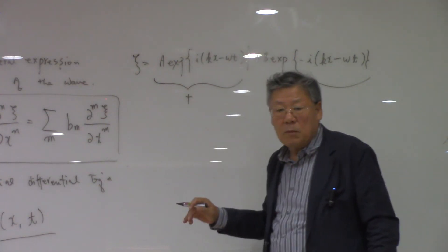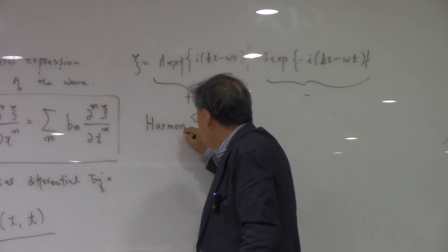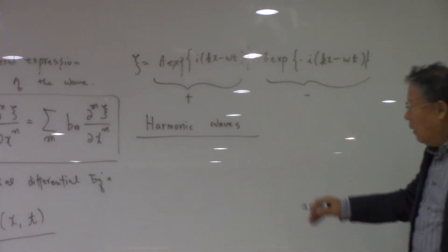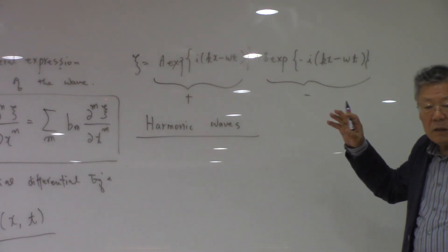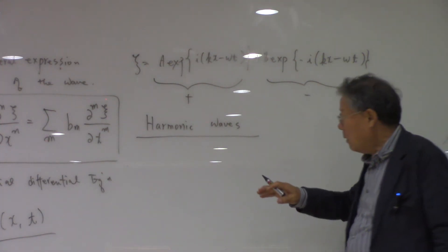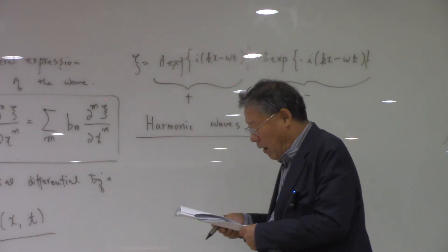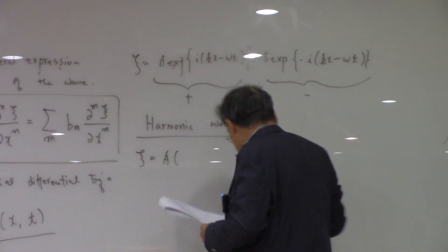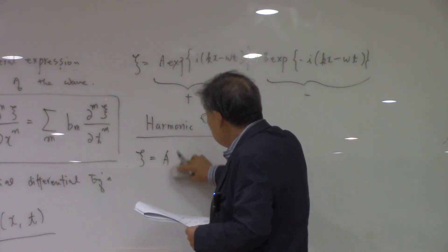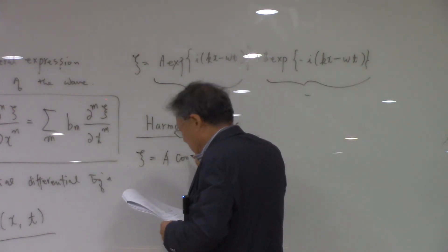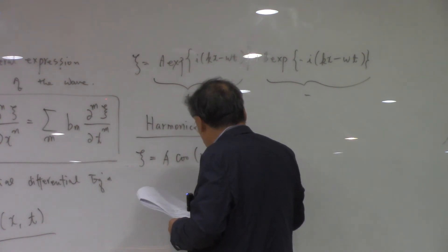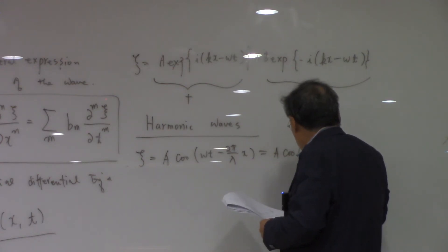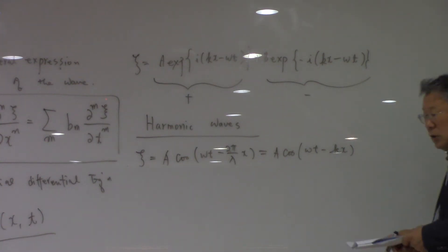We are going to deal with harmonic waves only. In general wave systems we cannot assume a non-dispersive harmonic form, but in this class we will work with harmonic waves: ψ = A·cos(ωt − (2π/λ)x) = A·cos(ωt − kx). We can also use the sine form — either is valid.